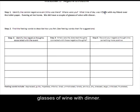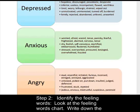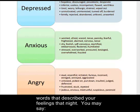So we'll put in the fight — a fight with your friend over the toilet paper, evening at her house, we did have a couple of glasses of wine over dinner. Next, identify the feeling words. You'll look at the feeling chart and try to come up with the words that sort of summarize how you felt at that time.